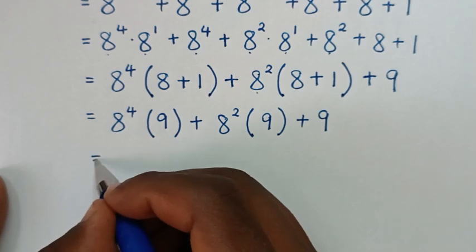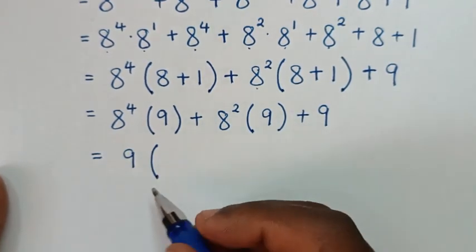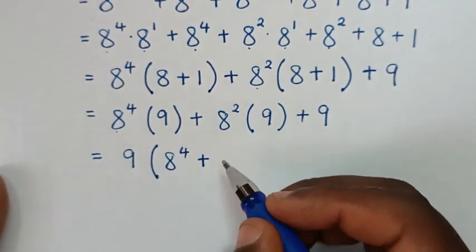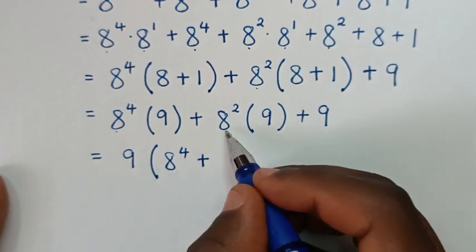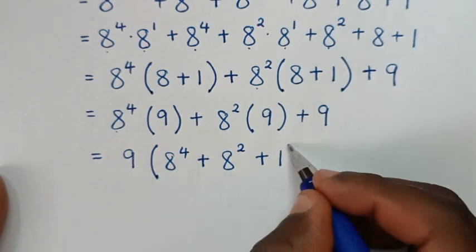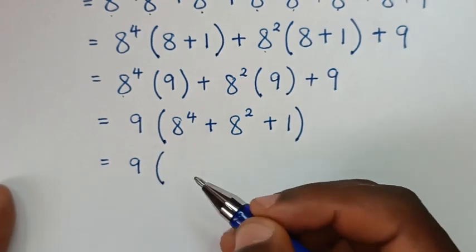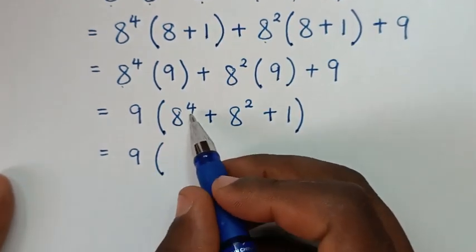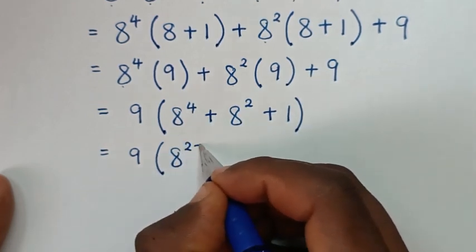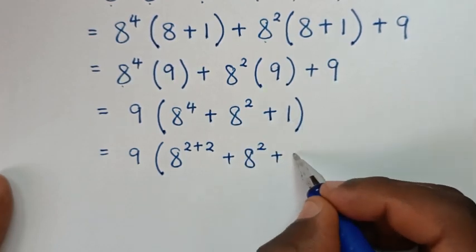In the next step, 9 is common, so we'll take 9 out of bracket. 8 power 4 times 9 divided by 9 is 8 power 4, plus 8 power 2 times 9 divided by 9 is 8 power 2, plus 9 divided by 9 is 1, bracket. Then it will be equal to 9 bracket, and to have 8 power 2 common: 8 power 4 is same as 8 power 2 plus 2, then plus 8 power 2, plus 1, bracket.